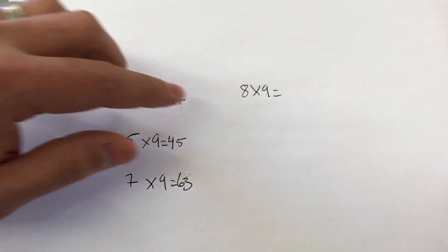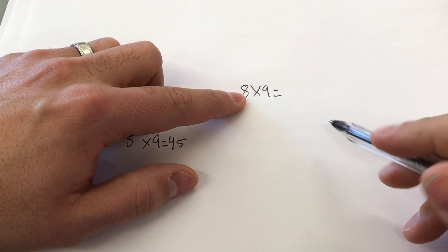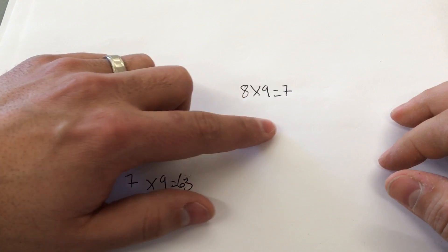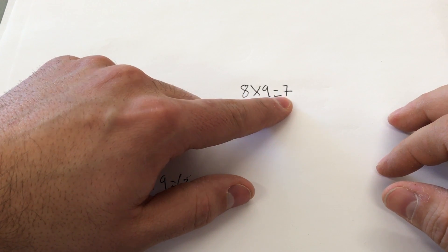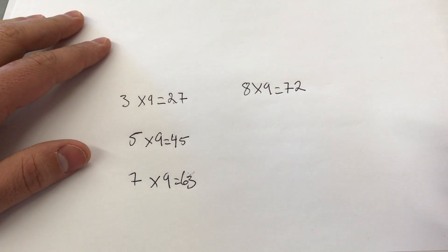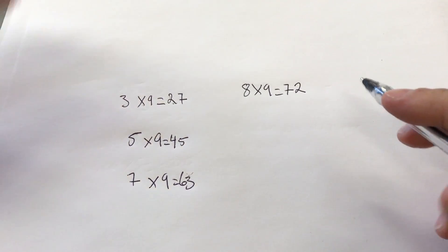8 times 9. Once again, we take away 1 from the non-9 number, which gives us 7, because 8 minus 1 is 7. And we take 7 and subtract it from 9, which gives us 2. 9 minus 7 is 2. So 8 times 9 is 72.